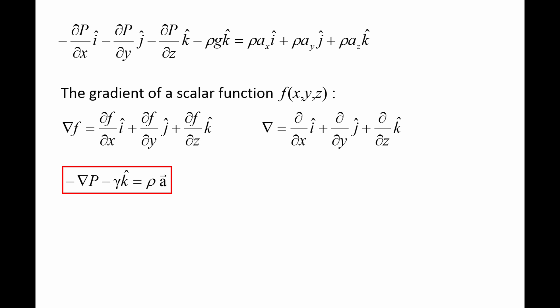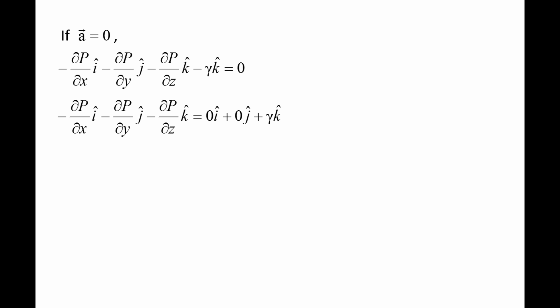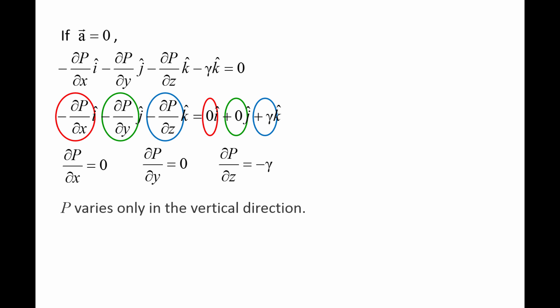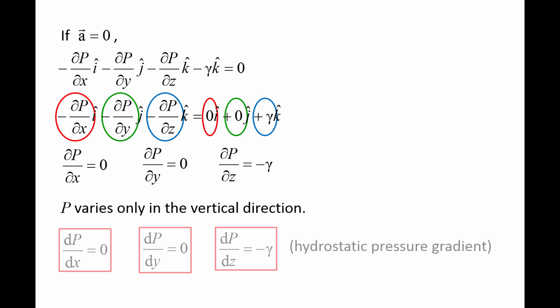This equation is valid for any fluid when shear stresses are negligible. Often the fluid of interest is not accelerating, such as water in a swimming pool. In those situations, we set the acceleration vector to zero. Moving the term gamma k-hat to the right side and equating components, partial p partial x equals zero and partial p partial y equals zero mean that pressure does not vary in the horizontal direction. Partial p partial z equals negative gamma means pressure increases as you descend through a fluid, so pressure only varies in the vertical direction. Since pressure is only a function of z, we can rewrite the partial derivatives as full derivatives: dp dz equals negative gamma is called the hydrostatic pressure gradient.